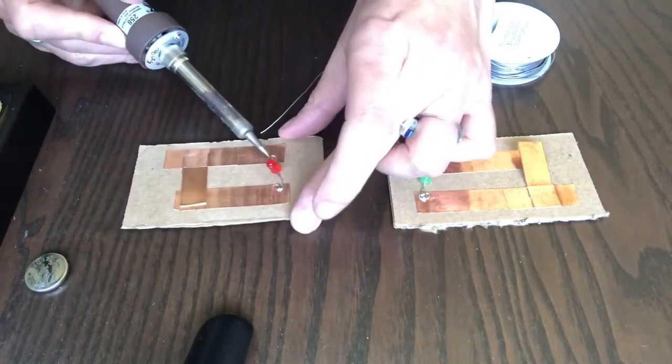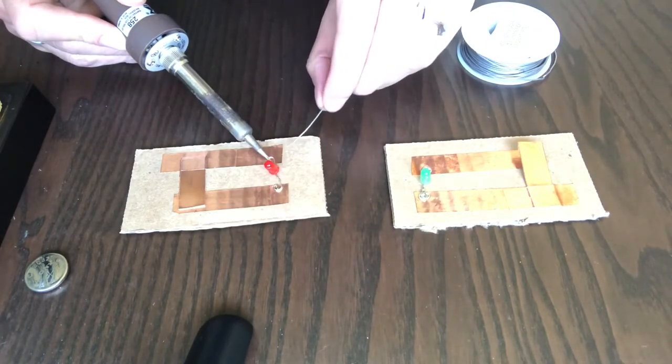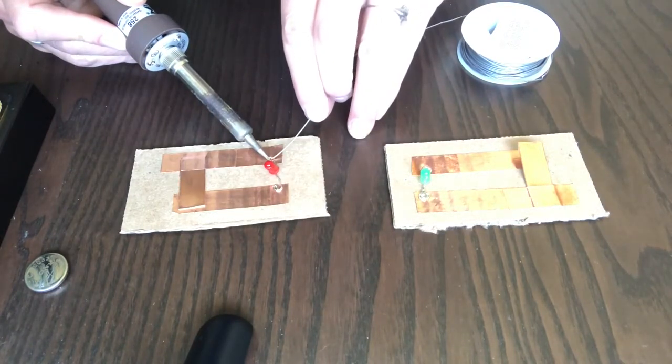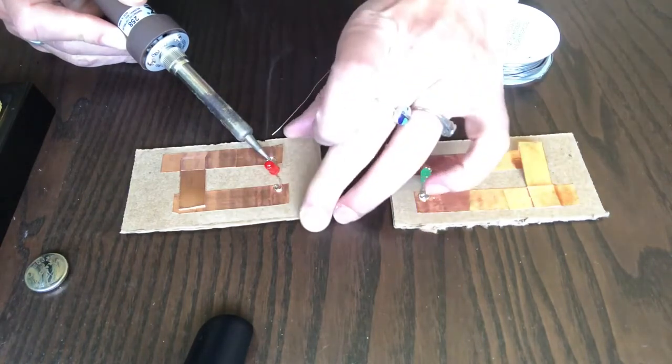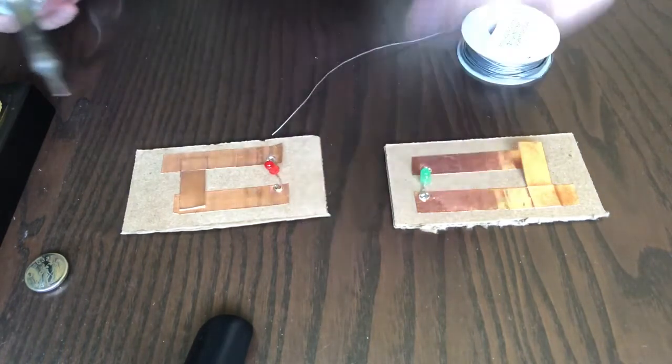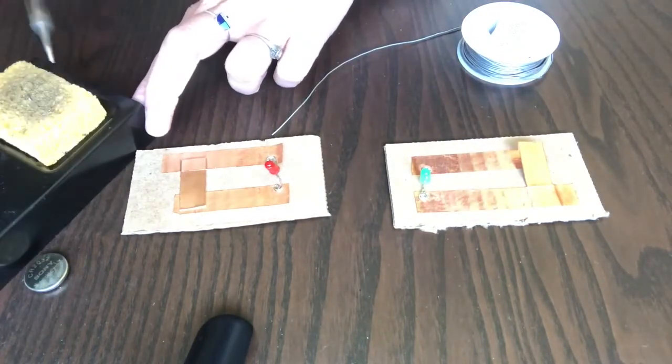So once again, we'll heat up some of that wire. And after a few seconds, go underneath and just use a nice amount of solder. And then we'll clean our tip again before we put it in the stand.